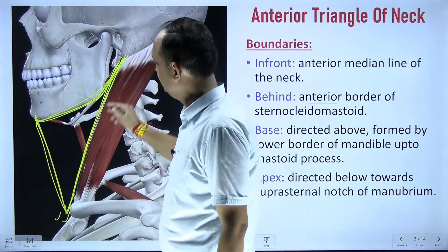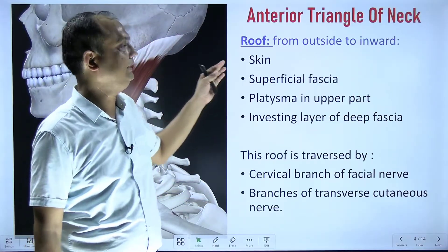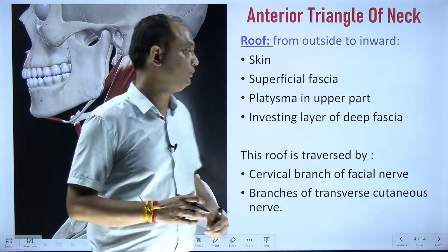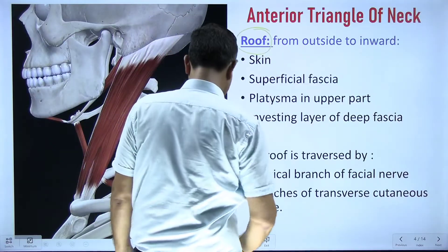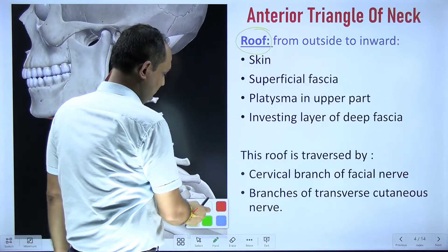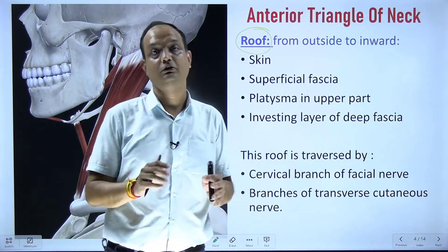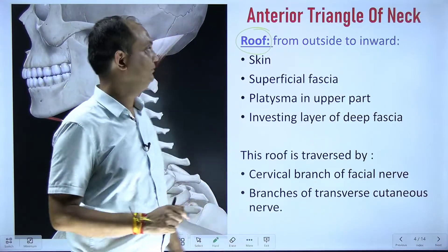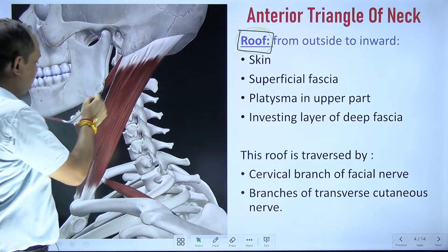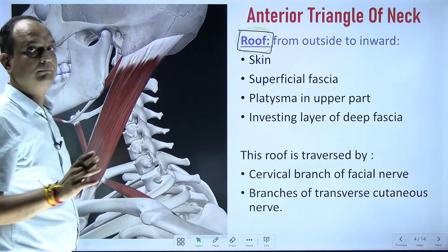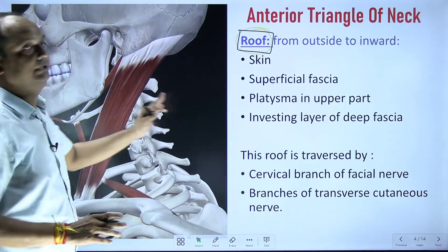The anterior triangle has a roof. This is an important concept to keep in mind: in the coming part, we will divide this anterior triangle into further smaller triangles, but whenever we talk about the roof of this area, we are talking about the common roof for any sub-triangles of the anterior triangle.